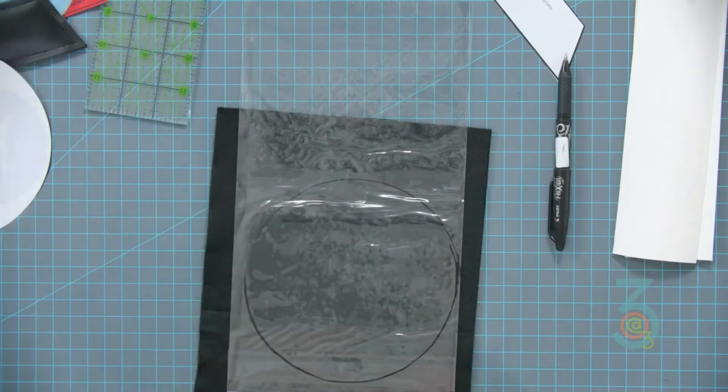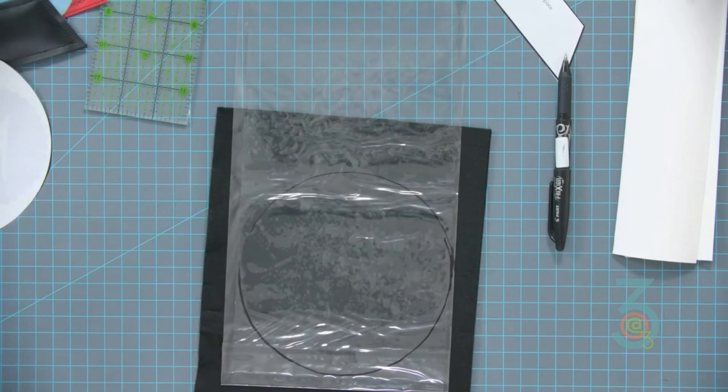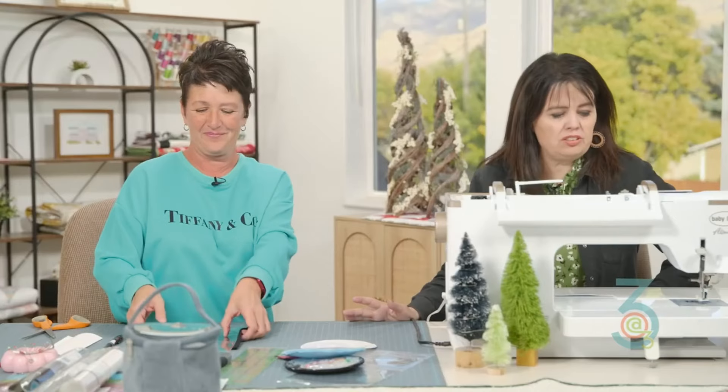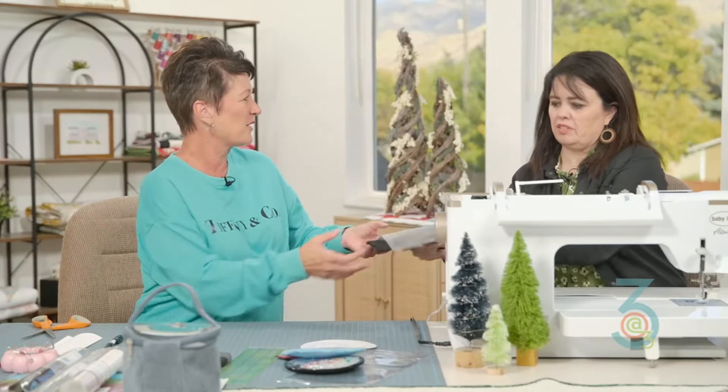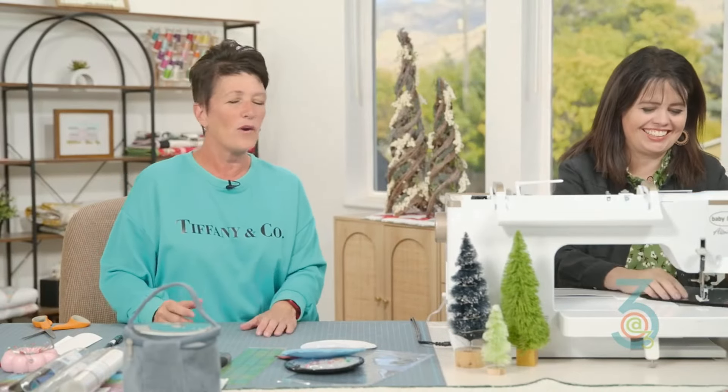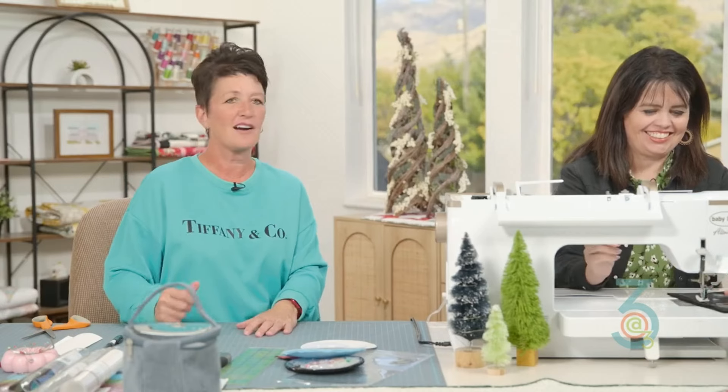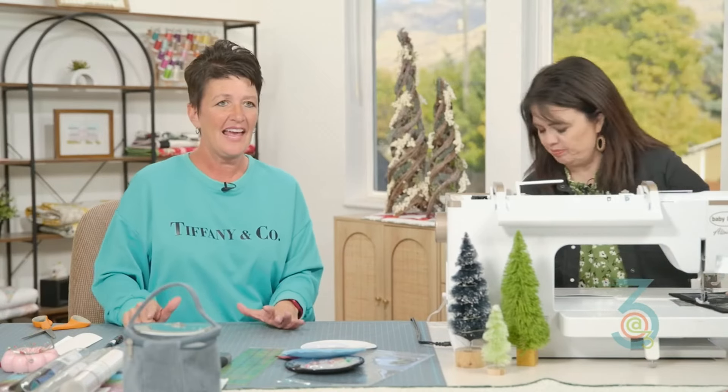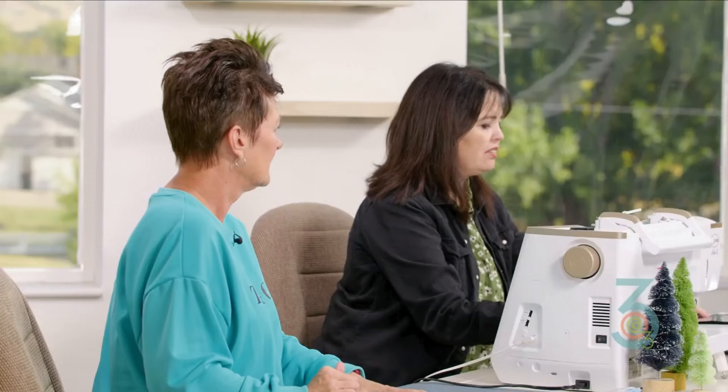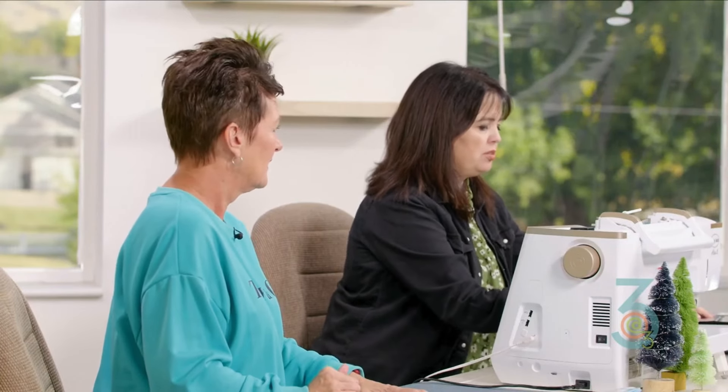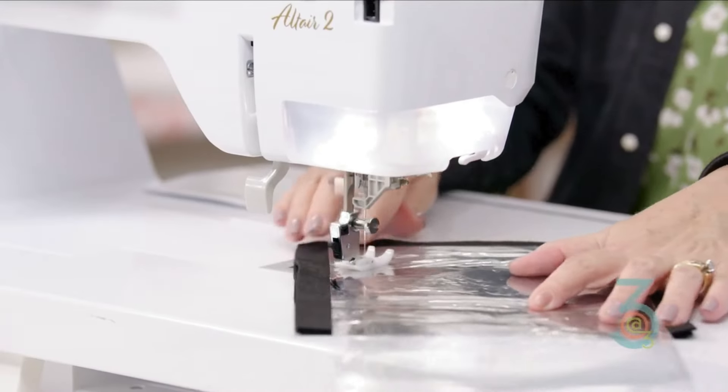Now we won't be able to sew it because this plastic is over top. I sewed mine with plastic. Now we're going to sew right on the line. We're going to leave a three inch opening, so be sure to backstitch because we are going to pull that plastic off and we don't want to pull those stitches out.